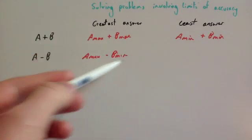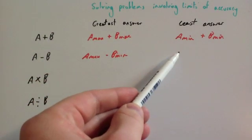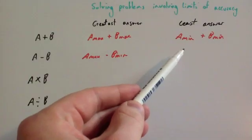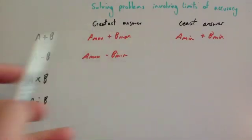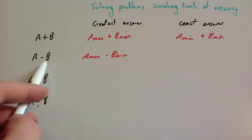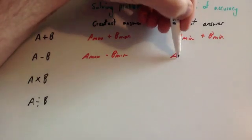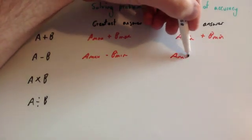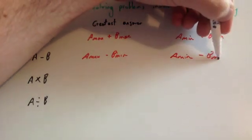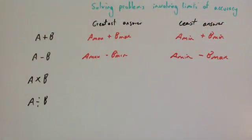If you wanted the biggest possible answer you'd want to take the smallest number away from the biggest. If we want the least answer — the lowest possible answer for a subtract b — you'd want to use the minimum for a and the maximum for b: a min subtract b max. Because that would give you the smallest difference between them.